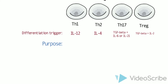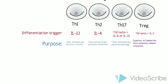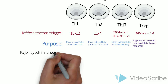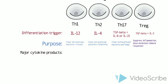Each T helper cell has a different main purpose or function. Th1 cells fight intracellular bacteria and viruses, Th2 fight extracellular parasites, Th17 fight extracellular bacteria and fungi, and Treg keep the rest of them in check.